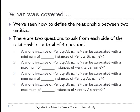So we've seen how to define the relationship between two entities. You ask two questions, and each pair of questions is asked from one side of the relationship — a total of four questions. You should always come up with a specific entity instance. If you talk in general terms about students and courses, you're very likely to end up with an incorrect minimum or maximum. You want to say, for any one student — in this case, Jennifer Smith.